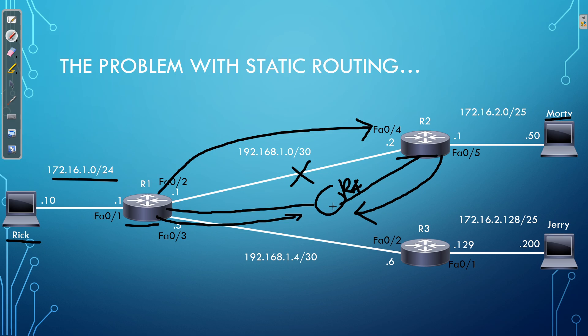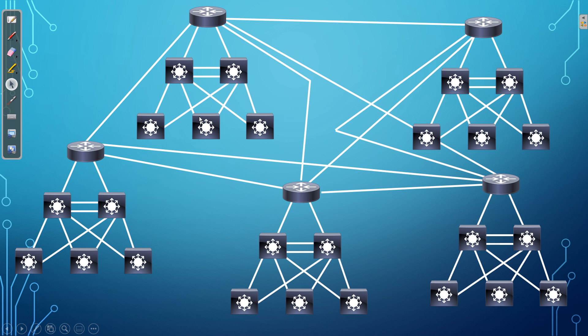Static routes in a small environment are fine, as long as the network stays that size. However, unfortunately, our networks don't look like that small example. Instead, our networks look like a large enterprise topology. If you try to use static routes in that sort of environment, it's going to get out of hand pretty quickly — very, very quickly.